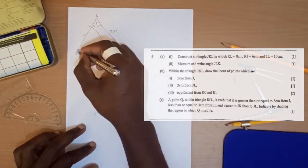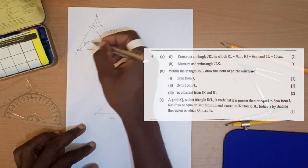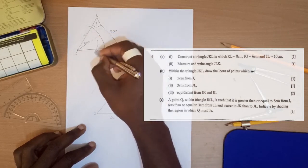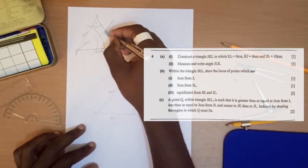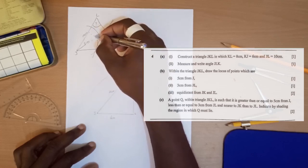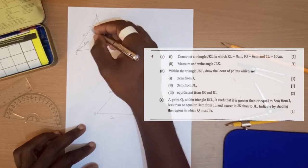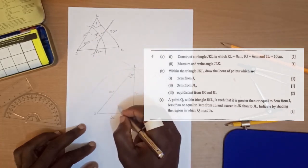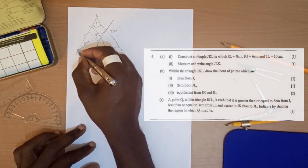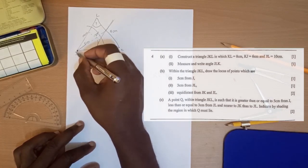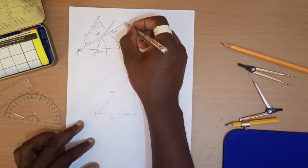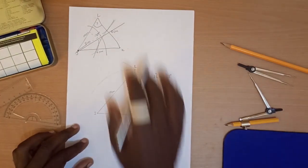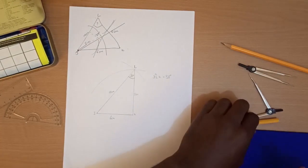So what we are doing is this: The first one is 5 centimeters from J. The second one is 3 centimeters from JL. So JL is this one, you draw two arcs and connect them with a straight line. The distance from there coming to touch that line should be 3 centimeters. And the last one is equidistance from JK and JL. J is the common one, so it would be a line crossing through J like that to represent the equidistance of JK and JL.